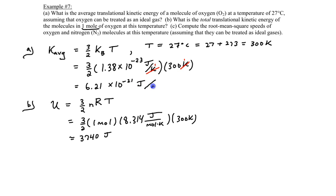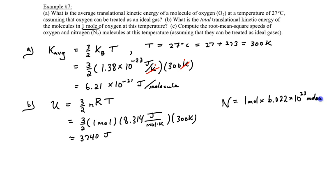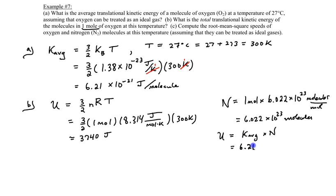There's an alternate method: since we know the energy per molecule, we can multiply by the total number of molecules. One mole contains 6.022 × 10²³ molecules (Avogadro's number). Multiplying the per-molecule energy of 6.21 × 10⁻²¹ J by 6.022 × 10²³ molecules also gives 3,740 joules — confirming our earlier result.